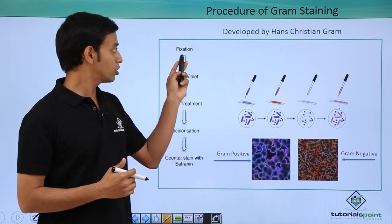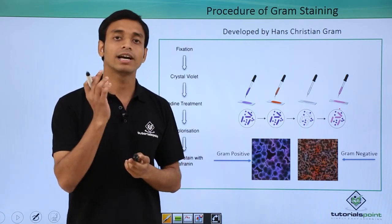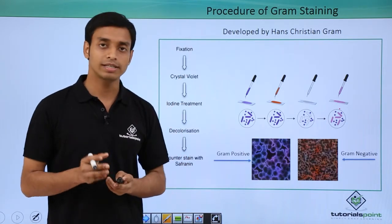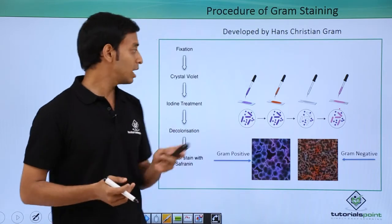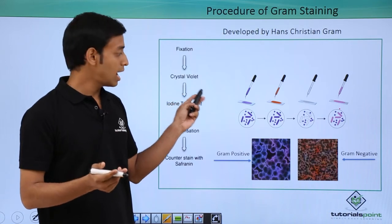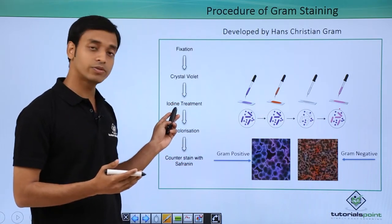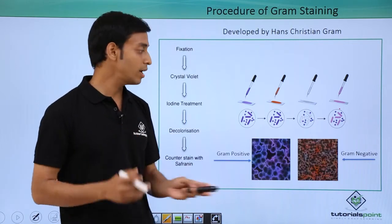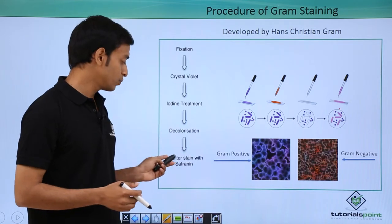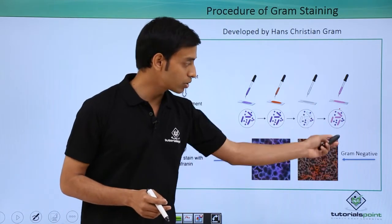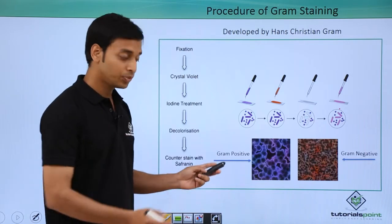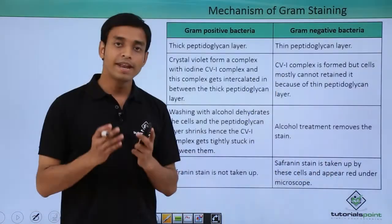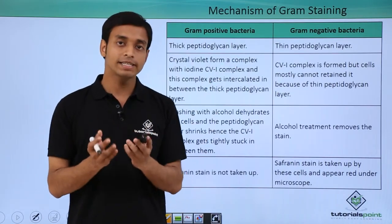Let's look at a schematic of gram staining. First, fixation fixes the cells on glass slides — heat fixed or air dried — so cells don't move under the microscope. Then staining with crystal violet is done, followed by iodine treatment, then a decolorizing step with alcohol or acetone. Lastly, counter staining with safranin is done. Gram positive bacteria appear purple and gram negative appear light pink or red.